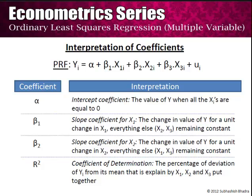Similarly for β₂, it is the change in value of y for a unit change in x₂, everything else, i.e. x₁ and x₃, remaining constant. The R-square, or the coefficient of determination, is the percentage of deviation of yᵢ from its mean that is explained by x₁, x₂ and x₃ put together.